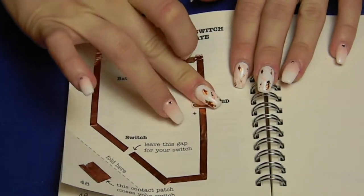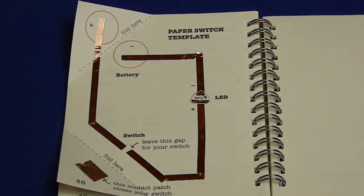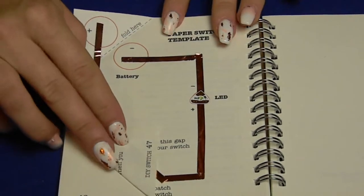Next you're going to lay your LED sticker down and fold at the corners.